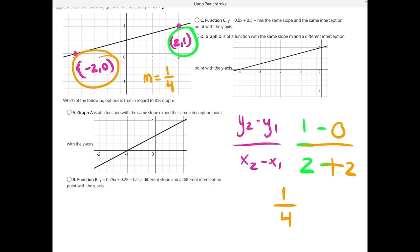For answer choice c, the slope is 0.5, or 1 half, and the interception point is also 0.5. So the interception point should be the same, and the slope should be different. But the answer says that the slope is the same, and the interception point is the same, which is not correct, making answer choice c incorrect.